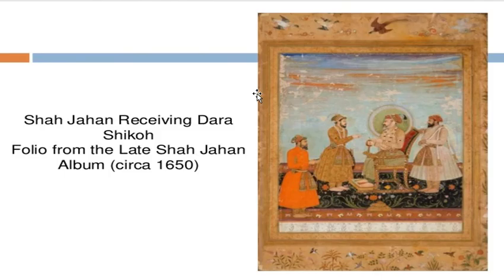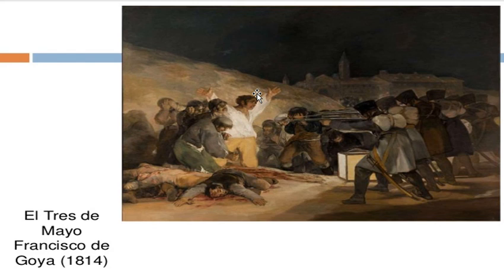Another one is 'Shah Jahan Receiving Dara,' more on Buddhism — a folio from the late Shah Jahan album, circa 1650 — a painting of a religious ritual. Another one is 'El Tres de Mayo' by Francisco de Goya in 1814, a massacre scene from history. Those are the different sources and kinds of subjects we may encounter in learning art appreciation.